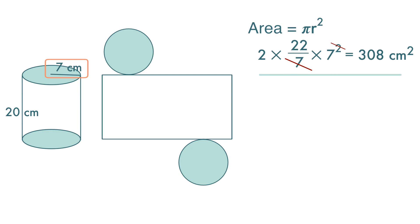Next, we want to find the area of this rectangle. The width of this rectangle is 20 cm, the same as the height of the cylinder.